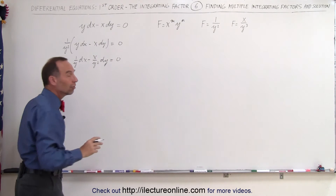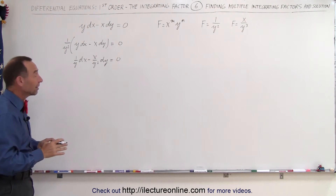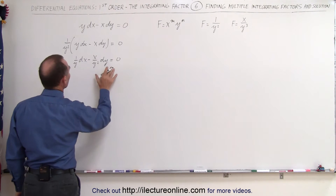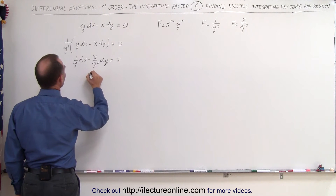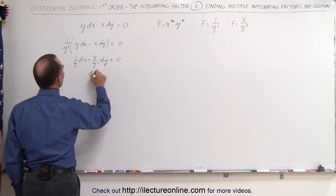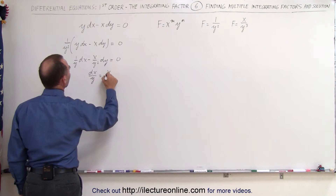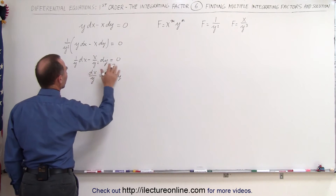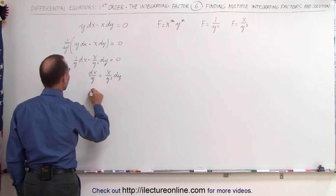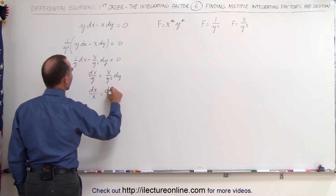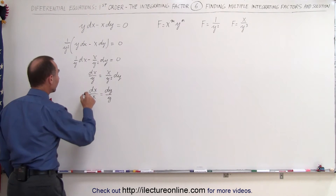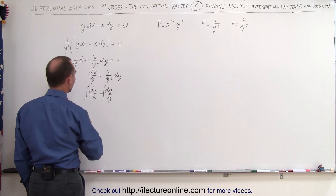Now let's go ahead and solve this equation. It turns out this can be easily solved by separation of variables. Moving terms over, we get dx over y equals x over y squared dy. Then moving the y's to one side and the x to the other, we get dx divided by x equals dy divided by y.